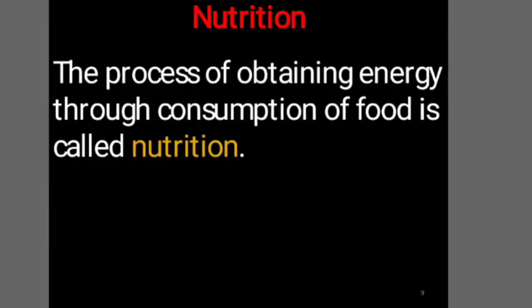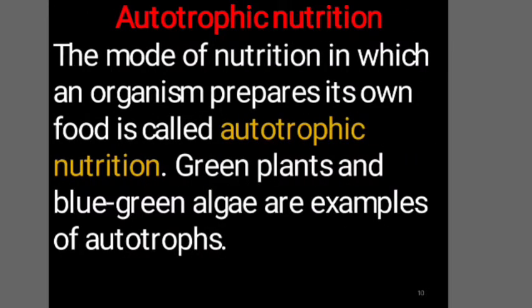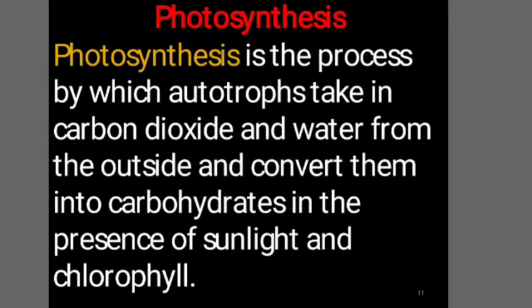To learn the first life process, digestion or nutrition, the definition goes like this: the process of obtaining energy through consumption of food is called nutrition. In the type of nutrition called autotrophic nutrition, an organism prepares its own food. Green plants and blue-green algae are examples of autotrophs. Photosynthesis is the process by which autotrophs take in carbon dioxide and water from the outside and convert them into carbohydrates in the presence of sunlight and chlorophyll.